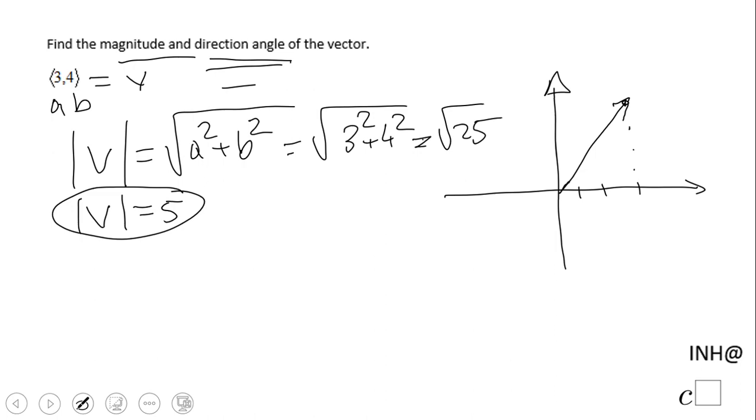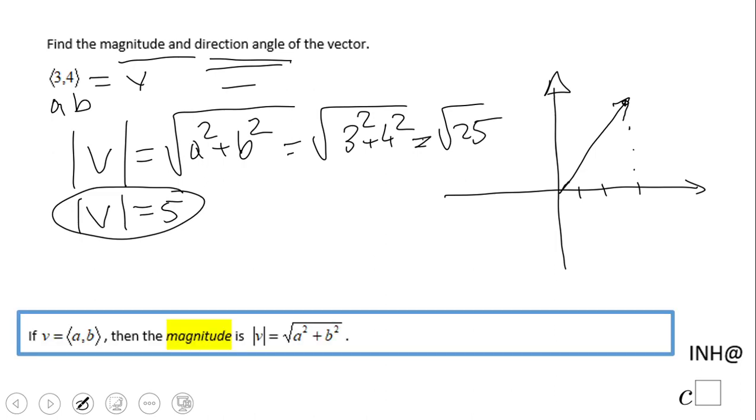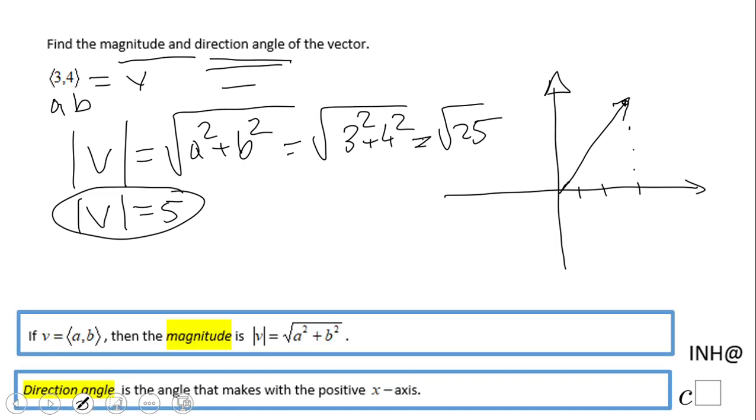And now let's look at the second part. The direction angle is the angle that makes with the positive x-axis. So it is theta. And now let's take a look at this triangle: this is 3, this is 4, and this is 5, right? That is the magnitude of the vector.